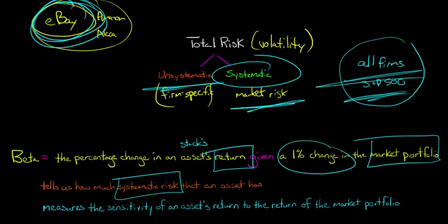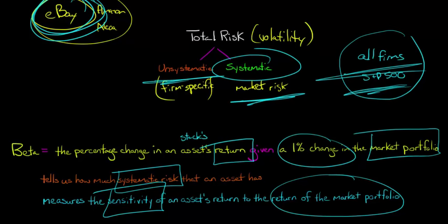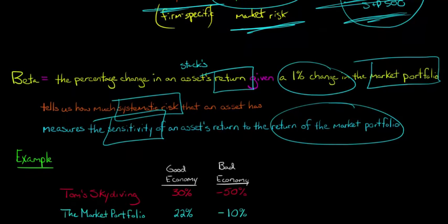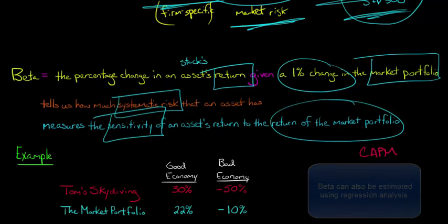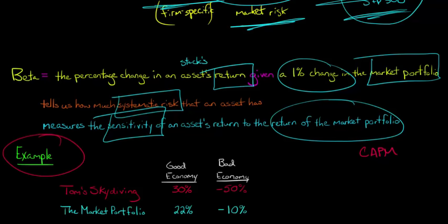And so we're ultimately, with beta, we're getting an idea of the sensitivity of eBay or whatever stock's return to the return of the overall market portfolio, for example, the S&P 500. Now, it can get pretty complex to calculate beta, but there are simpler ways to do it. And I don't want you to get tied in and think this is the only way. I'm just trying to show you something simple, and in future videos, we'll talk about the capital asset pricing model, which is a little more complex. But for right now, let's just do a real simple example of how you might go about calculating beta. So let's say that we have a company called Tom Skydiving, and there could be two things that could happen. The economy could be good, or the economy could be bad.